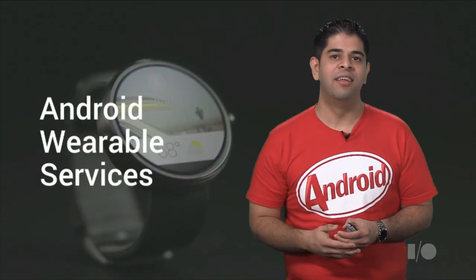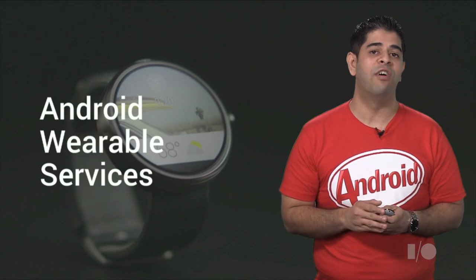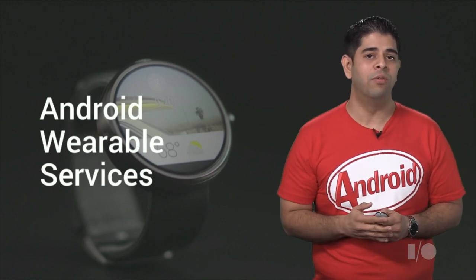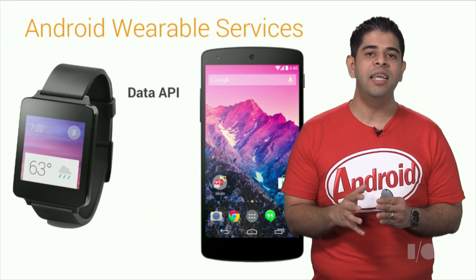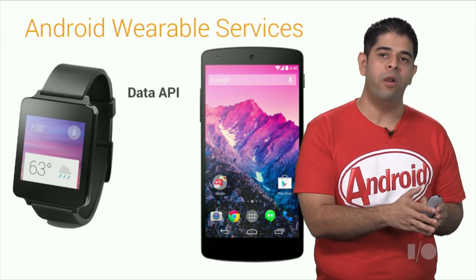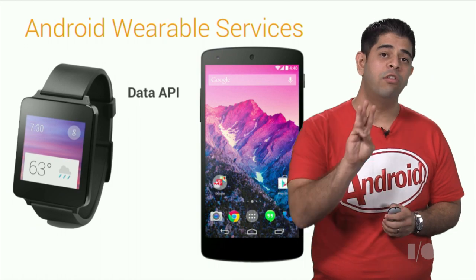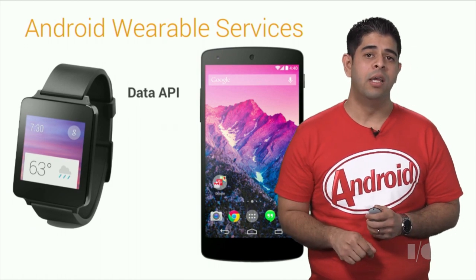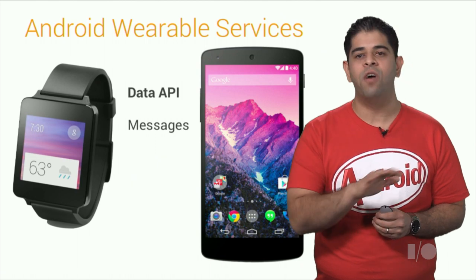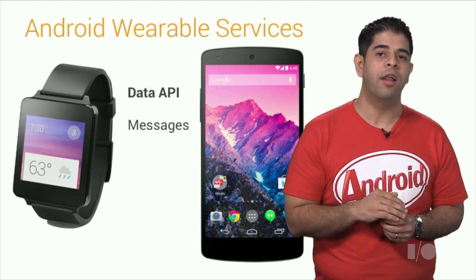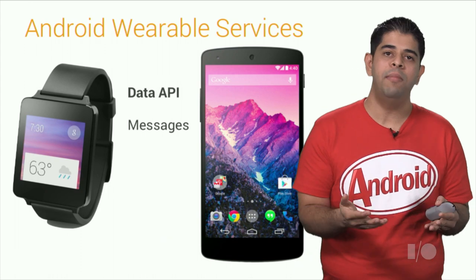Let's just dive right in. The first new API for Google Play Services 5.0 is Android Wearable Services. With the Data API, we can sync data between Android wearables and Android phones and tablets. This can be performed in three steps. The first is through messages. These are unidirectional, fire and forget, with delivery not guaranteed, and are useful for control signals, like media playback.